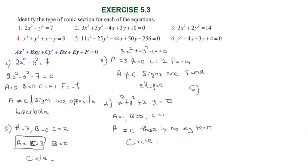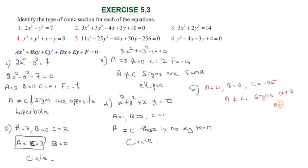For the fifth equation, a is not equal to c and the signs of a and c are opposite. Since a is not equal to zero and signs are opposite, the fifth equation is a hyperbola.